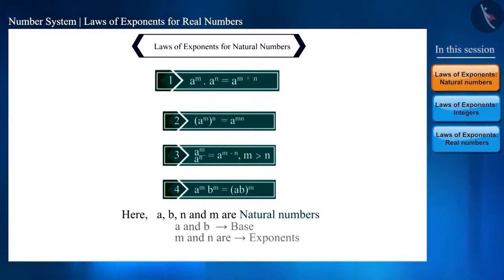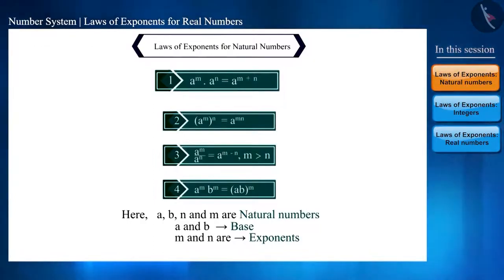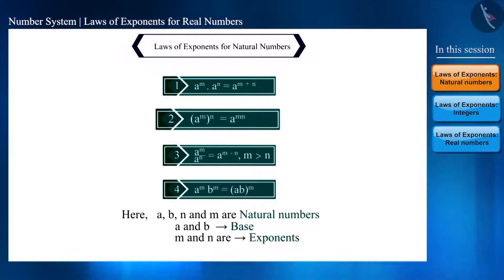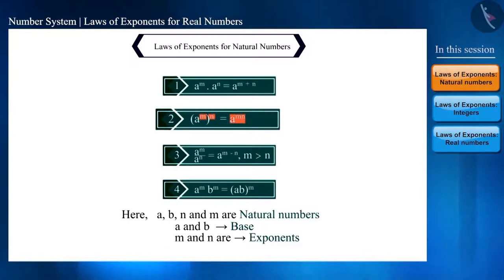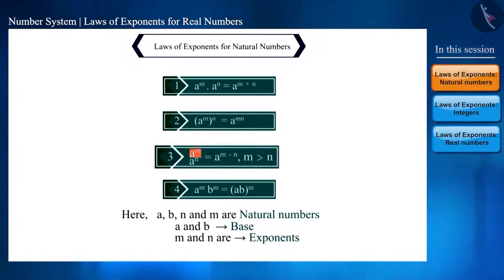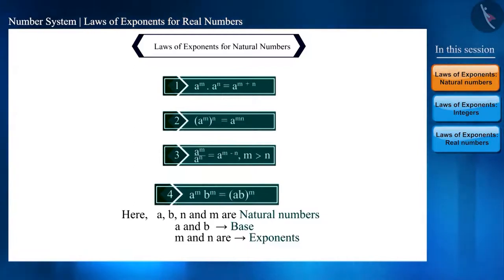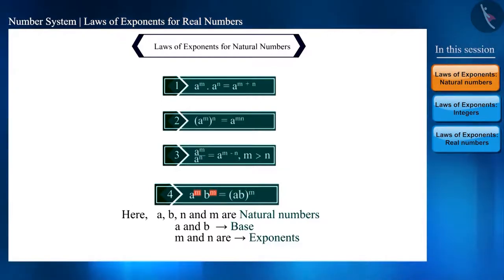As per the first rule, if a raised to the power m is multiplied with a raised to the power n, since the bases are the same, both the powers are added. As per the second rule, we multiply the power inside the bracket by the power outside. On dividing a raised to the power m by a raised to the power n, the result is a raised to the power m minus n. As per the last rule, if the bases are different but the exponents are the same, multiplying them gives the result written in that manner.